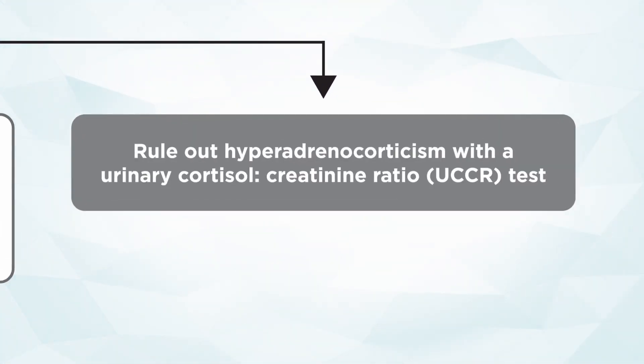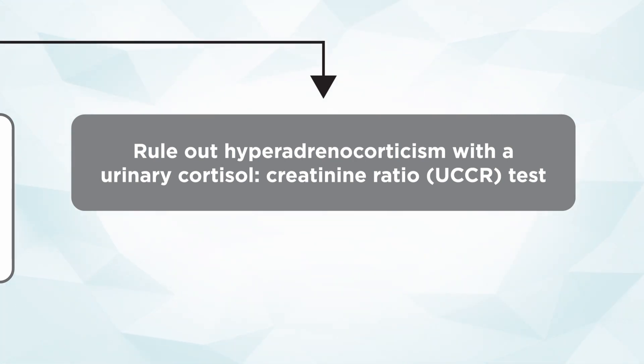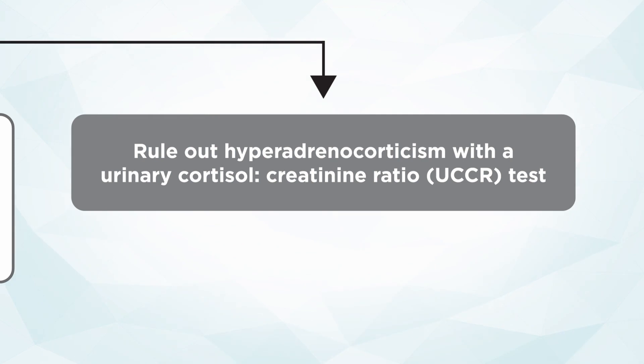What happens when you have an animal that's drinking a lot and urinating a lot, but you're not really thinking Cushing's disease and you want to rule it out? We have a great test for that called the urine cortisol to creatinine ratio. I don't think many of you will be running this test very often, but if you want to say this is not Cushing's disease, then the urine cortisol to creatinine ratio is the best test to run.